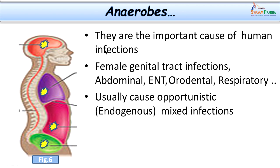Usually these organisms are neglected because they are not easily grown. They can cause infection in any organs and systems. Usually they cause abdominal infections, oral infections and deep organ abscesses including brain abscess, mastoiditis. They can cause chronic pharyngitis, ear, nose, and throat infections, orodental infections, neck space infections, respiratory infections, and lung abscesses.